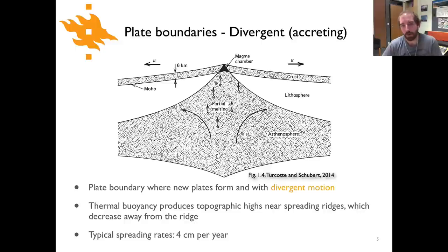The rates of spreading are on the order of centimeters per year, as you well know. Typically something like four centimeters a year would be a good number to have in your head for an average spreading rate. They do vary a bit. The Pacific spreading ridges are a bit faster than the Atlantic, for example, and we'll see that actually in just a moment.